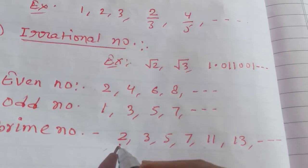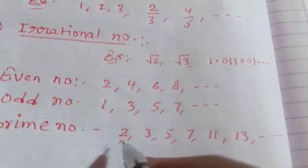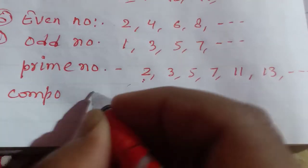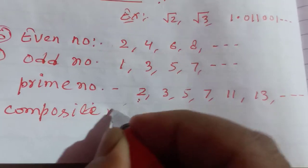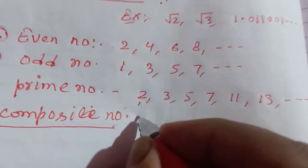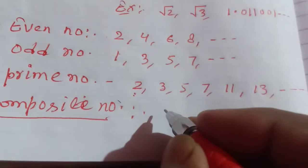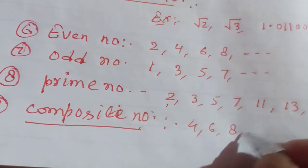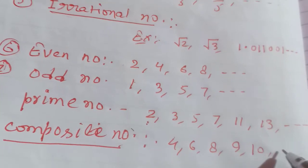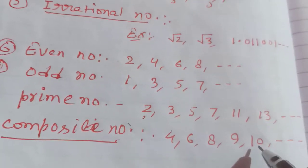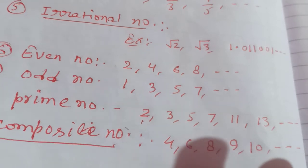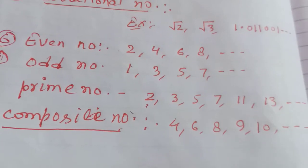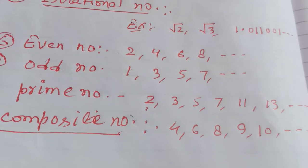Composite number: a composite number is the number which has more than 2 factors. The smallest composite number is 4, and examples include 6, 8, 9, 10, etc. A composite number is divisible by numbers other than itself and 1, which is why it has more than two factors.